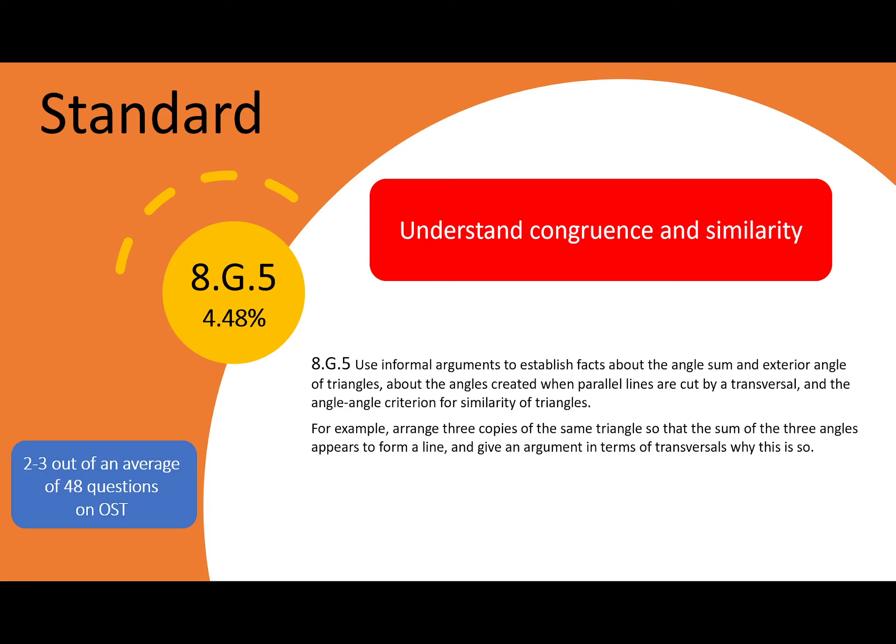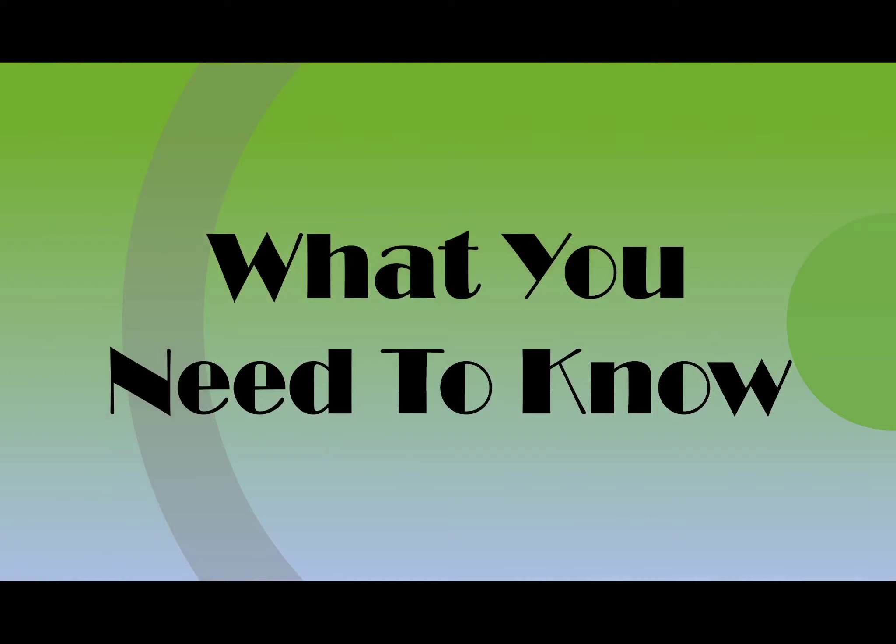For example, arrange three copies of the same triangle so that the sum of the three angles appears to form a line, and give an argument in terms of transversals why this is so. Hello and welcome. Here is what you need to know before we get to the examples.